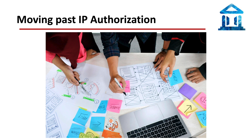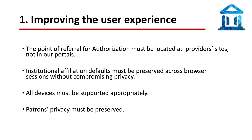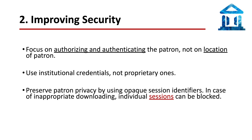In broad terms, a replacement for IP authorization should address two major areas of concern: improve the user experience and improve security. To improve the user experience, the point of referral for authorization must be located at provider sites, not in our portals. Institutional affiliation defaults must be preserved across browser sessions without compromising privacy. All devices must be supported appropriately and patrons' privacy must be preserved. IP authorization is highly unsecure — IP addresses can be spoofed and the institutional networks can be penetrated for illicit downloading. Since IP authorization has no facility for authenticating and authorizing users, it is highly vulnerable to misuse.